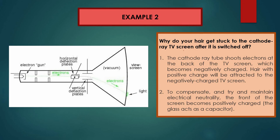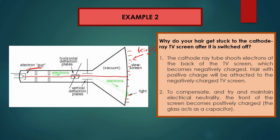Why does your hair get stuck to a cathode ray TV screen after it is switched off? In a cathode ray TV there is an electron gun that emits electrons and shoots them to the screen. When the screen receives electrons from the electron gun it becomes negatively charged. When your hand touches the screen, your hair is positively charged so it is attracted to the negatively charged screen.